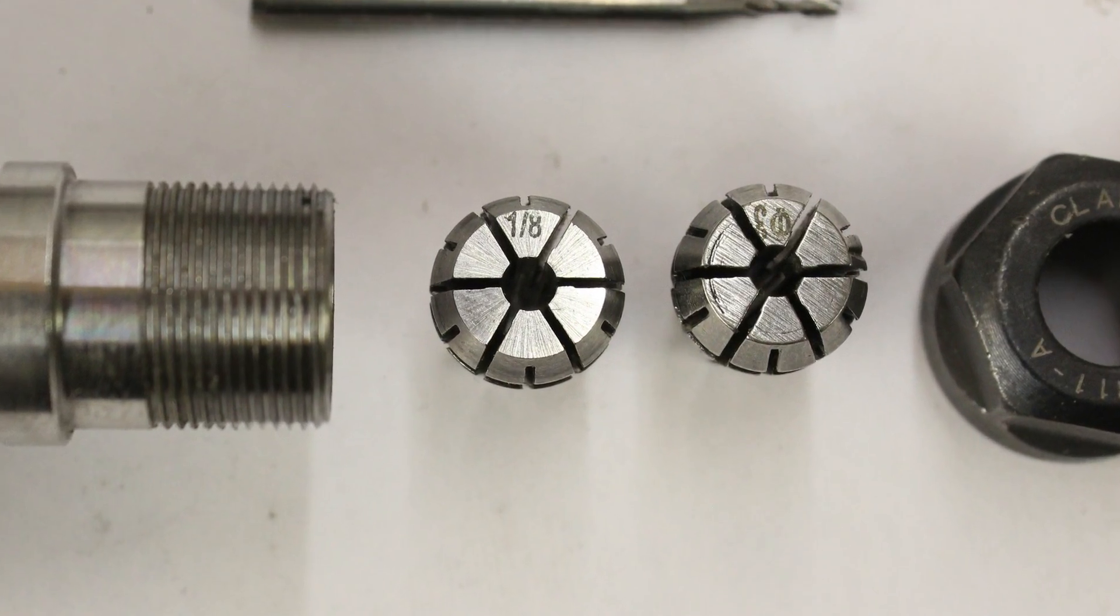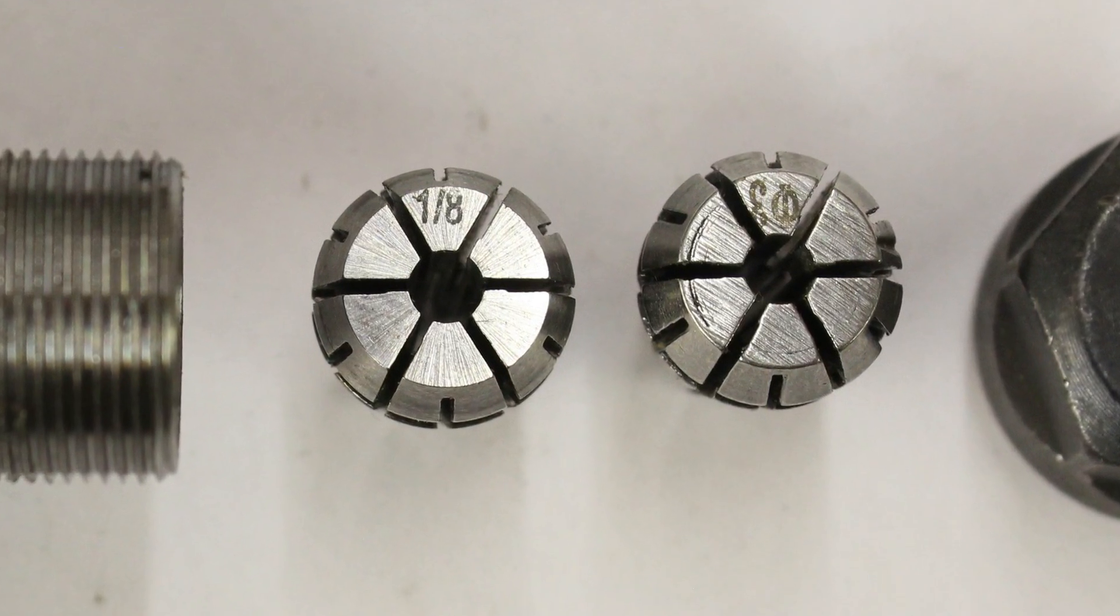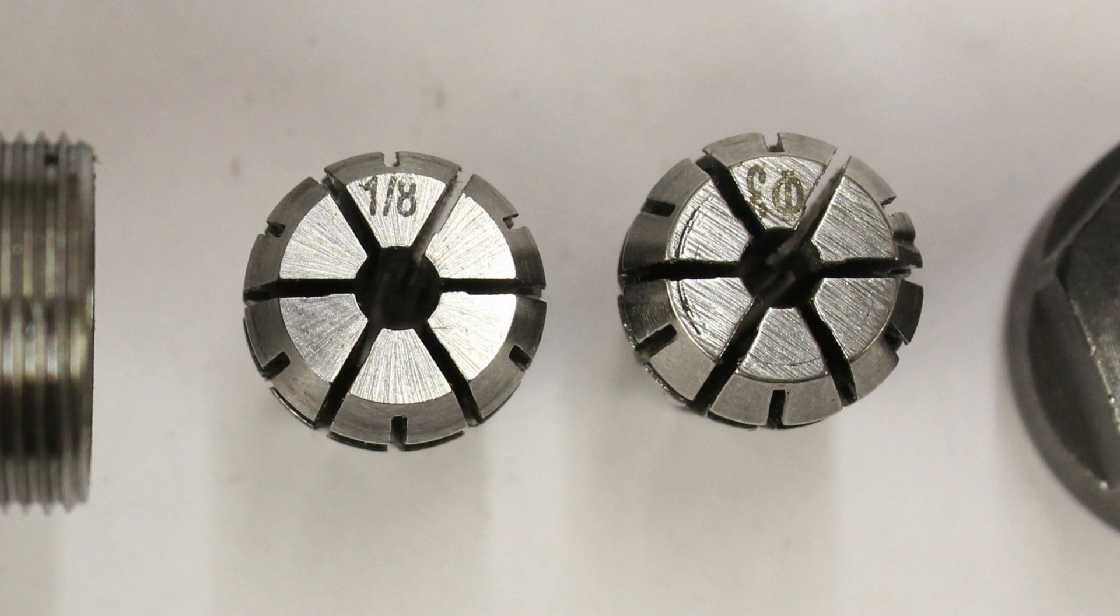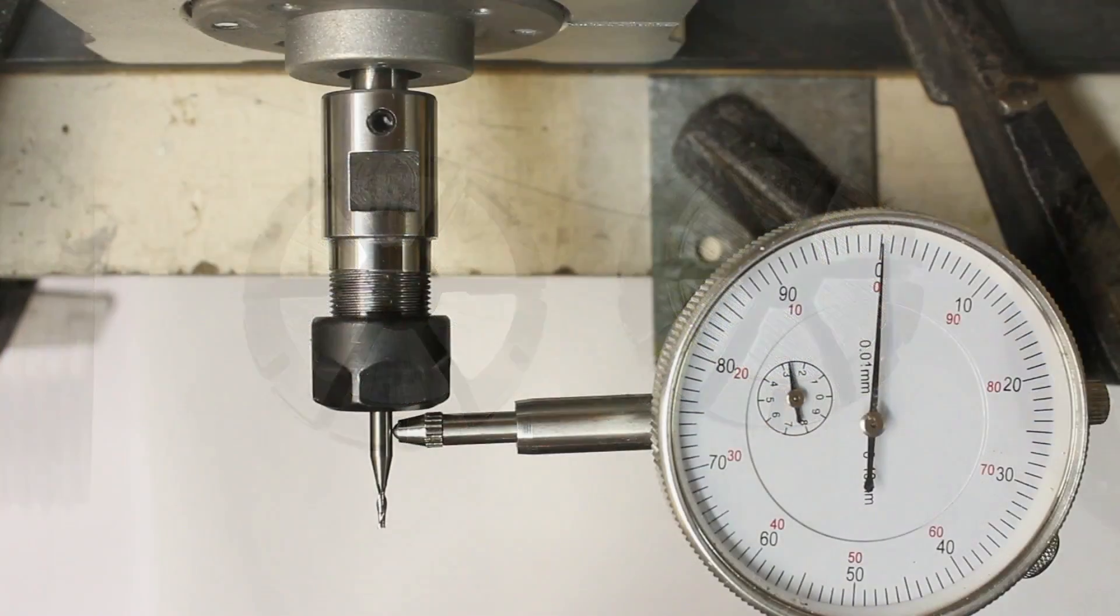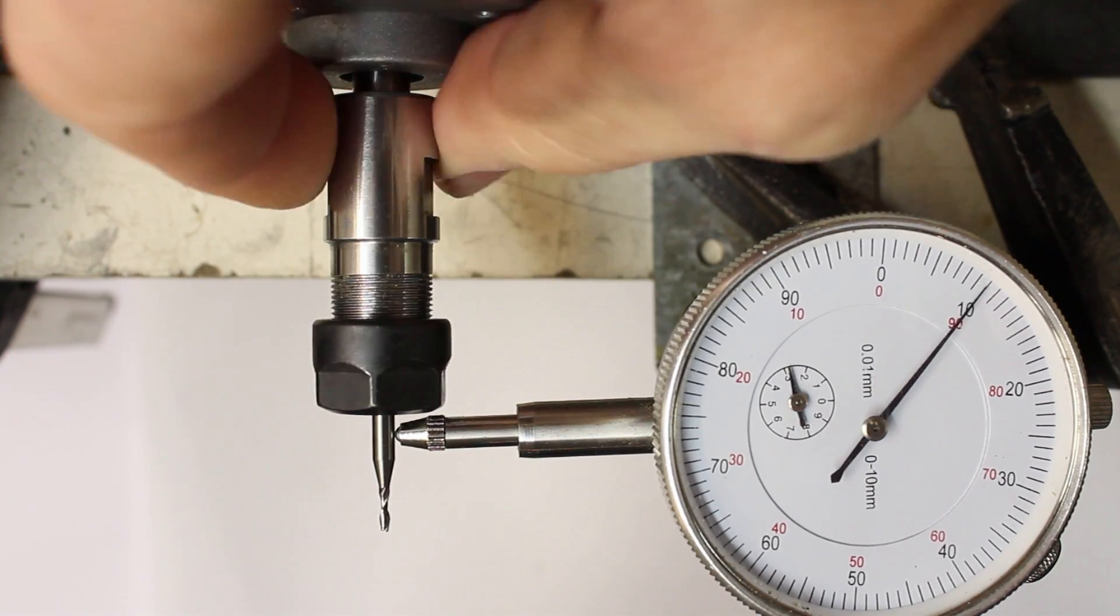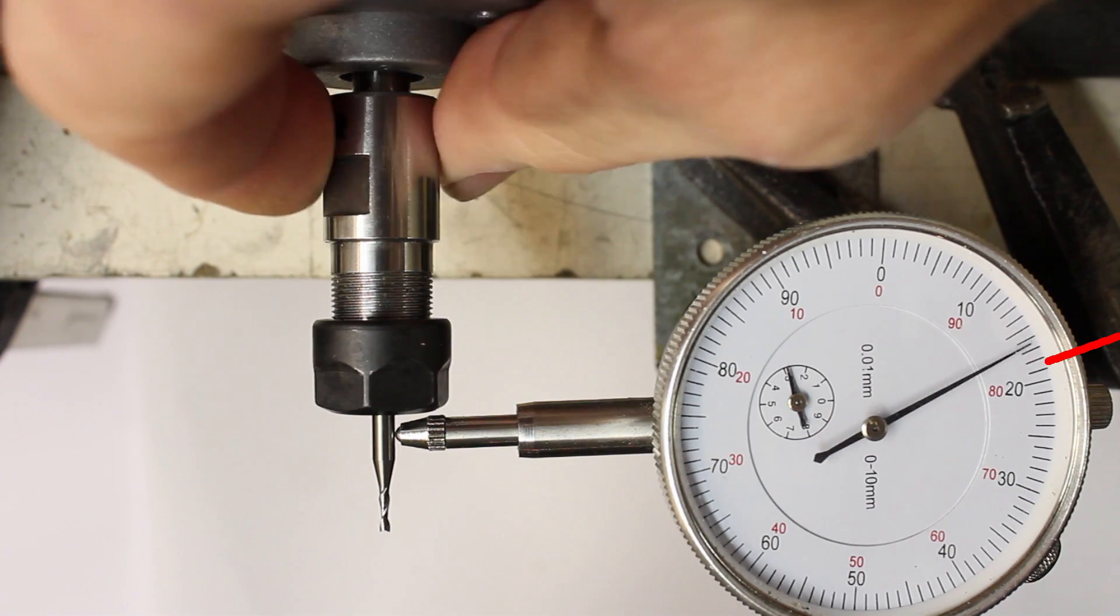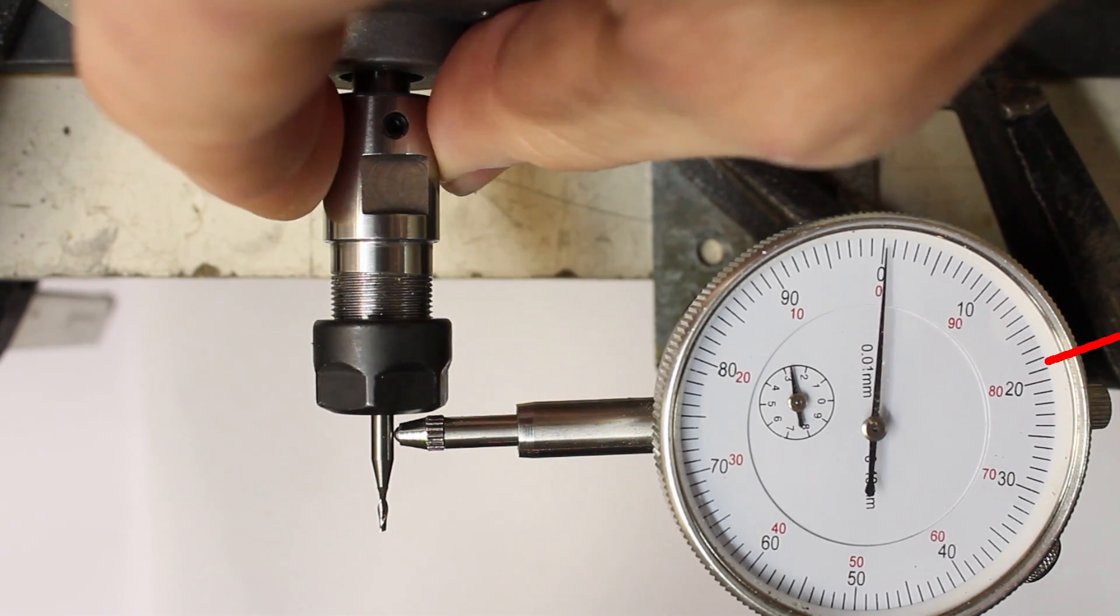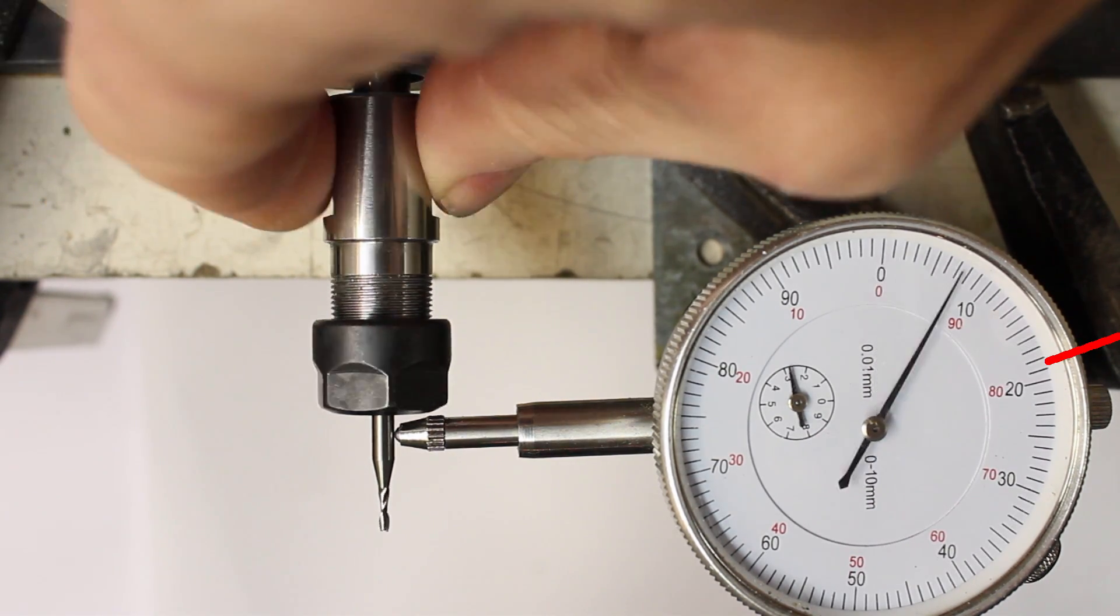Always use the correct collet for your milling cutter. You can squeeze the 3.175mm shaft also in the 3.0mm collet, but that is not recommendable. With that configuration we get an inaccuracy of 190 micrometers.